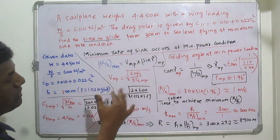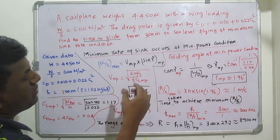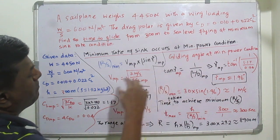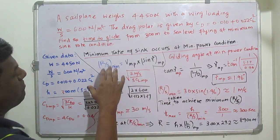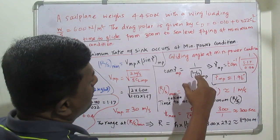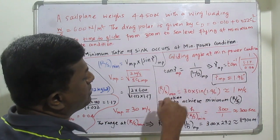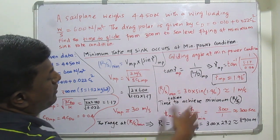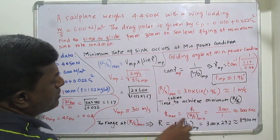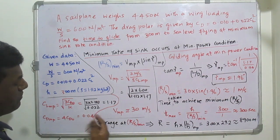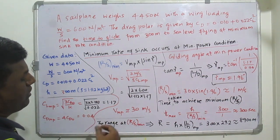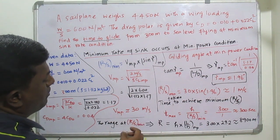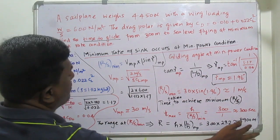I hope this problem gives a comprehensive idea of how we find the minimum rate of sink, the gliding angle at minimum power conditions, the time taken to glide from 300 m to sea level, and the range covered — all based on minimum rate of sink conditions.